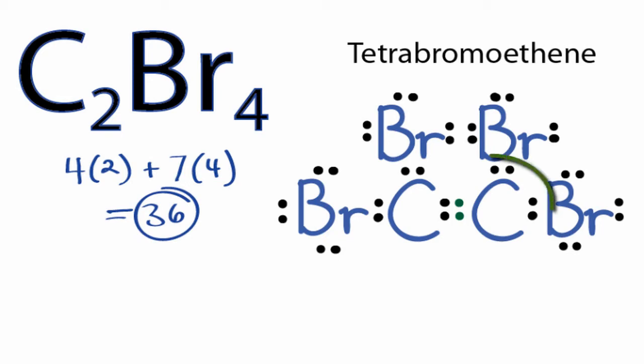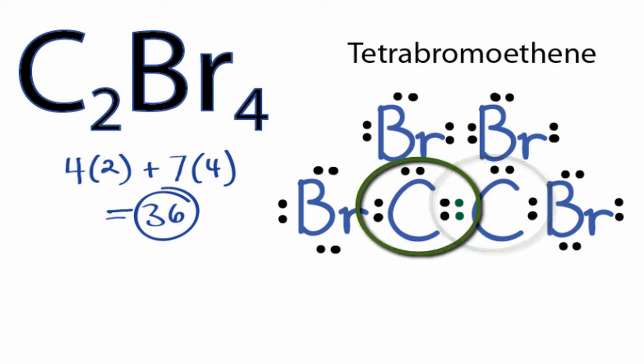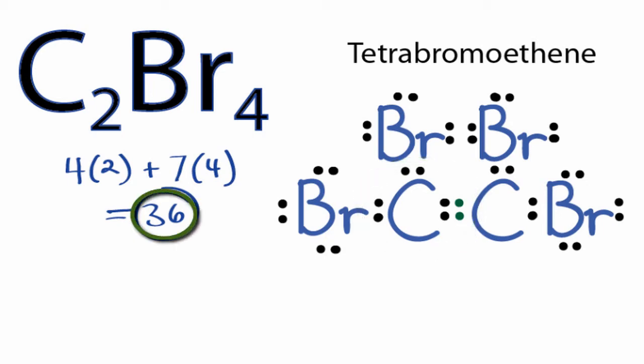Now the carbon on the right still has eight valence electrons, and the carbon on the left has eight valence electrons as well. We're still using the 36 valence electrons we have for the C₂Br₄ Lewis structure. We've used all our valence electrons and each of the atoms has an octet. That's the Lewis structure for C₂Br₄.